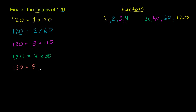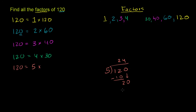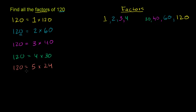Is 5 times something equal to 120? Well, 120 ends with a 0. If a number ends with a 0 or a 5, it is divisible by 5. So 5 definitely goes into it. Dividing it out: 5 goes into 12 two times, 2 times 5 is 10, subtract, you get 2, bring down the 0, 5 goes into 20 four times, 4 times 5 is 20, no remainder. So 5 times 24 is also equal to 120 — two more factors: 5 and 24.